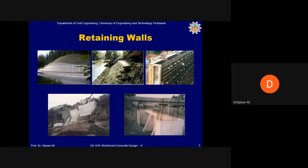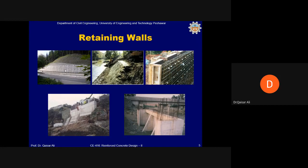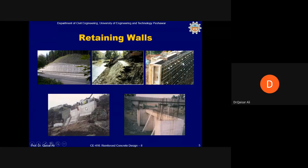These pictures show a few retaining walls. On the top left is a composite retaining wall made with stones and vertical concrete elements. You can also see holes called weep holes, provided to release pore water pressure from the backfill, since rainwater percolating into the backfill may create pore water pressure. Another picture shows a reinforced concrete retaining wall, and another shows a stone masonry retaining wall with some visible damage. The top right shows reinforcement for a reinforced concrete retaining wall.